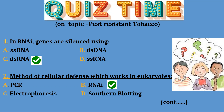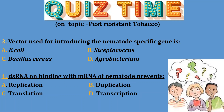Question 3: The vector used for introducing the nematode-specific gene is — Option A: E. coli; Option B: Streptococcus; Option C: Bacillus cereus; Option D: Agrobacterium. The correct answer is Option D — Agrobacterium is the vector.